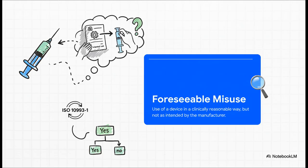Well, it's when a device gets used in a way that the manufacturer didn't intend, but it's still considered reasonable in a real-world hospital or clinic. That word reasonable is the key. We're not talking about something crazy like a surgeon using packing material as an implant. We're talking about predictable, everyday ways that people might deviate from the instructions for use.